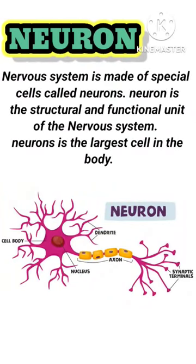Neuron. The nervous system is made of special cells called neurons. A neuron is the structural and functional unit of the nervous system. Neuron is the largest cell in the body.